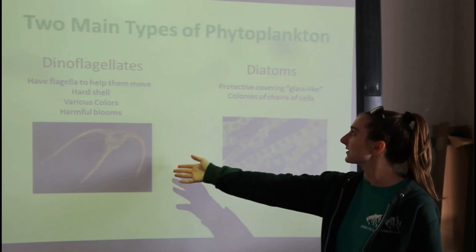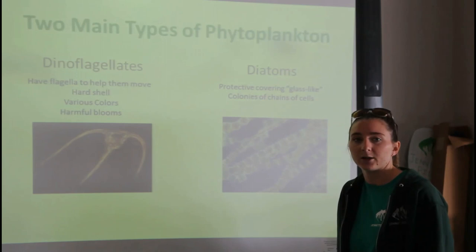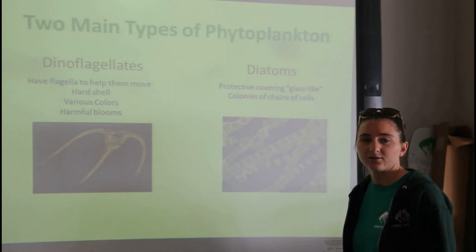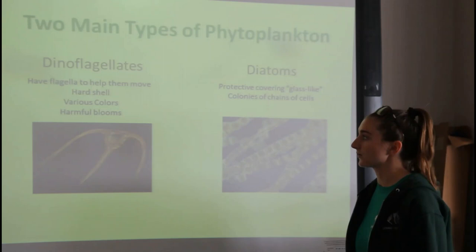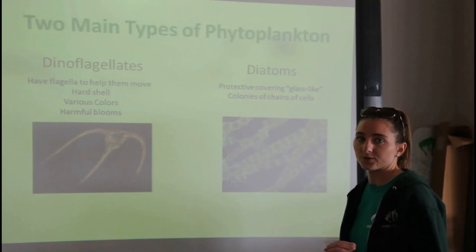There are two main types of plant plankton. We have dinoflagellates and we have diatoms. Dinoflagellates have that evil quality like the plankton from SpongeBob sometimes. They can cause harmful blooms like bioluminescence and red tide events. It's not necessarily bad for us, but it can be bad for shellfish and other creatures in the ocean. These ones have flagella — like little tails — that can propel them through the water just a little bit, but remember they can't swim on their own, only when it's super, super still water.